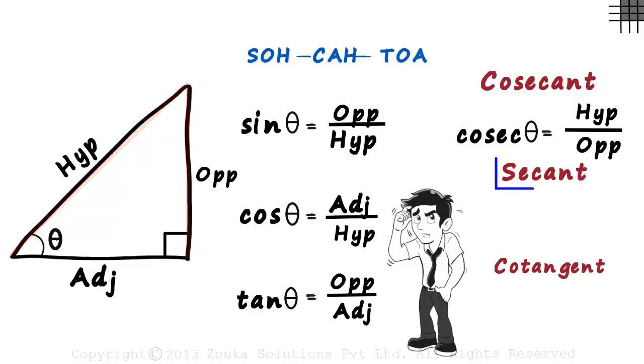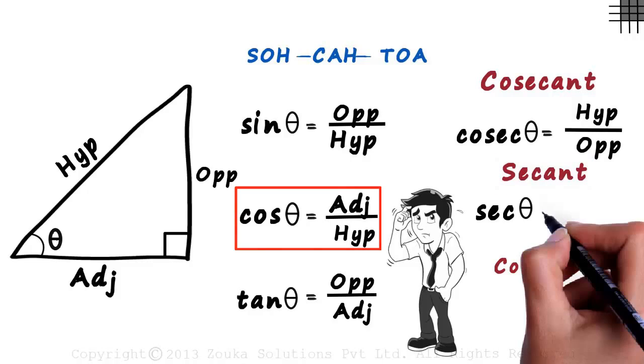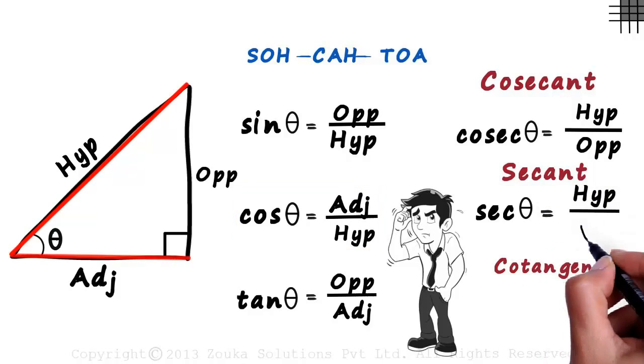The secant function is written as sec theta. And guess what? That's the reciprocal of cos theta. Reciprocal of cos theta is hypotenuse by adjacent.